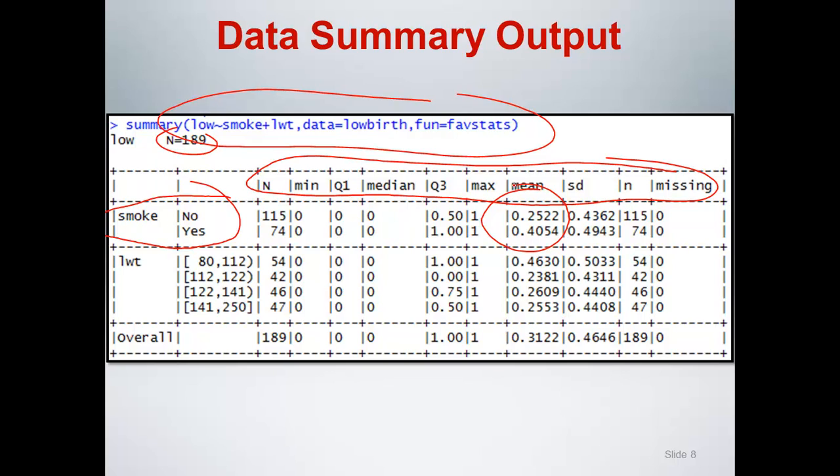And so what we have here is a mean of 0.25 means that 25% of the women who did not smoke during pregnancy had low birth weight babies versus 40% among those women who did smoke during pregnancy. So the mean here represents the proportion of those with a low birth weight. And so that's kind of consistent with our intuition that there may be a relationship between smoking status during pregnancy and low birth weight. So the next row with LWT, what has been done is it's essentially broken this continuous variable of weight at last menstrual period up into quartiles.